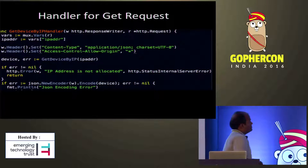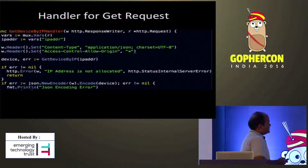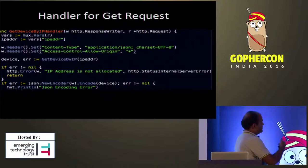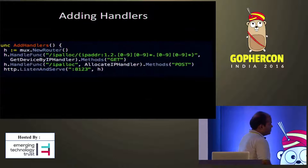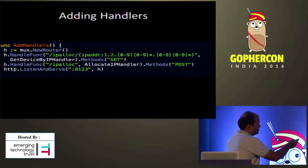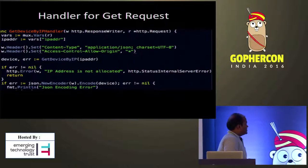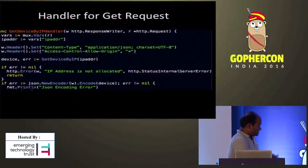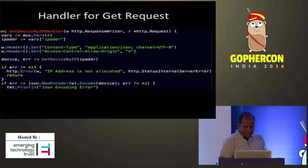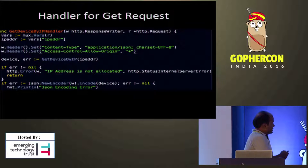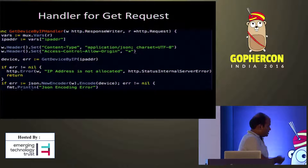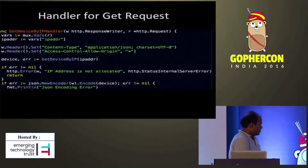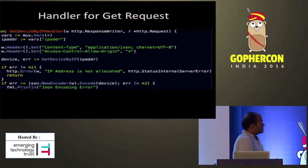Let's look at how the handler for a GET request looks. It being a GET request, the data is fetched from the vars variable — IP address. We are using ipAddr there, because we specified that variable in the HandleFunc route. We set some headers in the response writer using w.Header().Set(). Access-Allow-Origin is needed because I was testing with an AngularJS frontend — if you don't use it, you will get a CORS error. After the headers are set, the device is fetched. If there are no errors, it writes the response using json.Encoder.